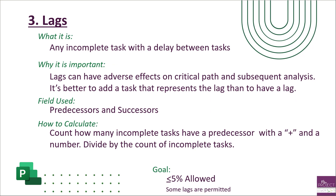Recap on lags: a lag is an incomplete task that has a delay between two tasks, and those lags can have adverse effects on the critical path — so we want to avoid them as much as possible. We're looking at the predecessor and successor columns. Calculate how many have a predecessor or successor with a positive sign, then divide that count by the number of incomplete tasks. DCMA allows no more than five percent of your schedule to have lags.